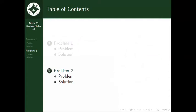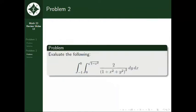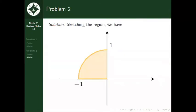Moving on to the second problem, we have to evaluate the double integral of 2 over the quantity 1 plus x squared plus y squared raised to 2, dy dx, where y is integrated from 0 to the square root of 1 minus x squared, and x from negative 1 to 0. Sketching the region, we have a graph of a quarter of a circle. Originally, the region uses vertical strips, or a type 1 region, with its upper bound y equals the square root of 1 minus x squared, which is the unit circle.